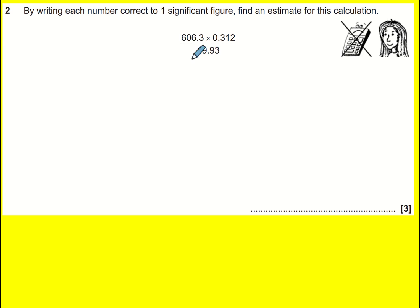Here we are estimating a fraction and we're told to write each number correct to one significant figure. That basically means make them as simple as you can. But let's talk through the process of rounding to one significant figure because sometimes you might be asked to estimate using two significant figures.